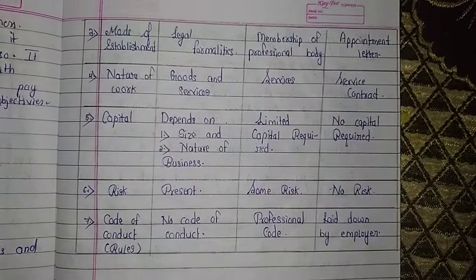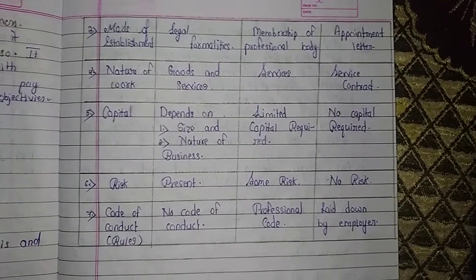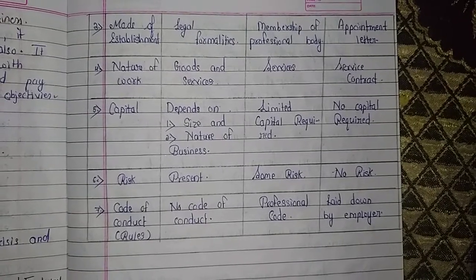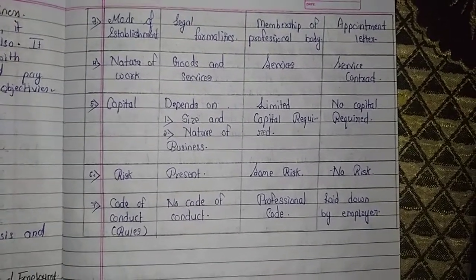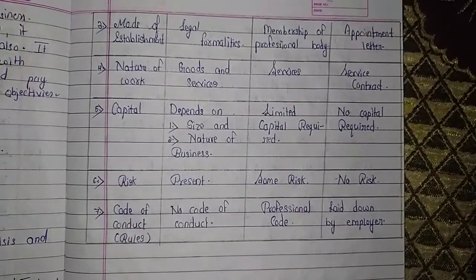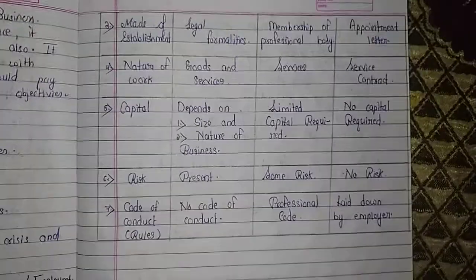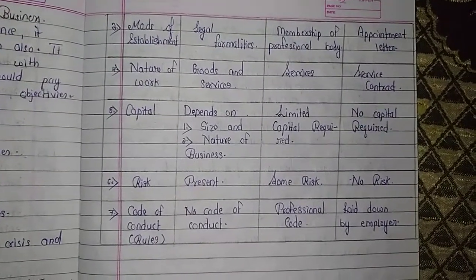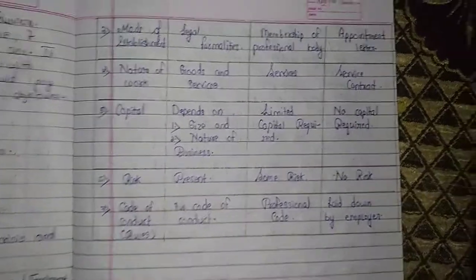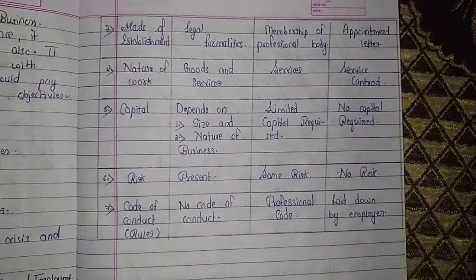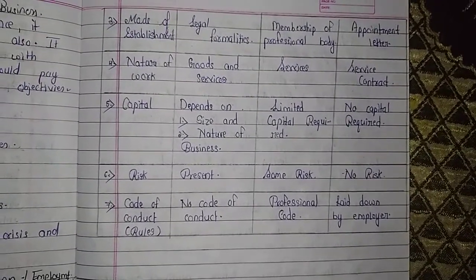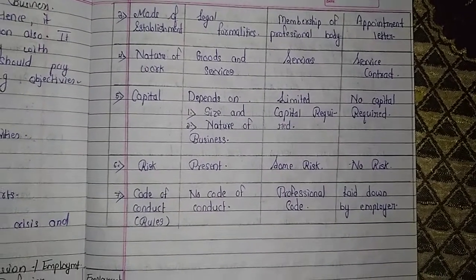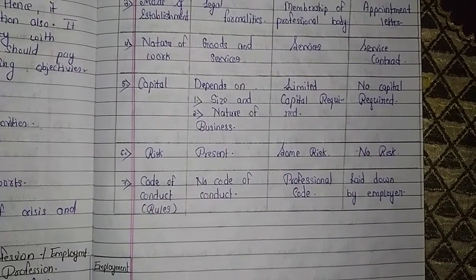The third basis is mode of establishment. Business is established through certain legal formalities. In profession, you have to take membership from professional bodies. In employment, you enter through appointment letters or similar documents.